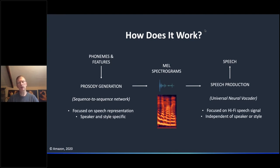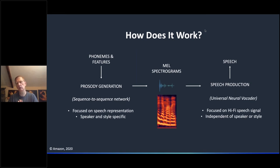The basic approach we're taking uses two neural systems. The first, on the left-hand side represented by prosody generation, takes in the textual information and generates an intermediate representation. The most commonly used intermediate representation is a predicted MEL spectrogram. This predicted spectrogram is then passed into another neural model — the universal neural vocoder — which attempts to synthesize from this predicted spectrogram a human-like audio signal. That's the general approach.